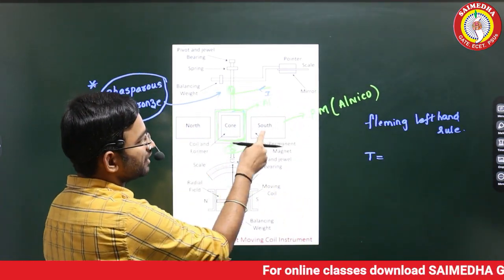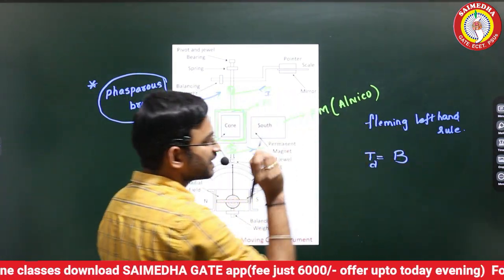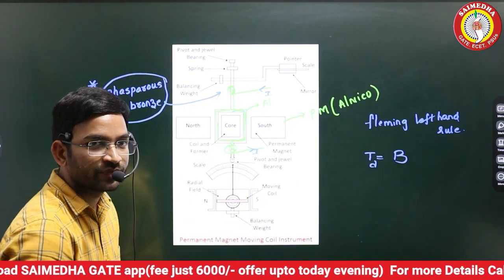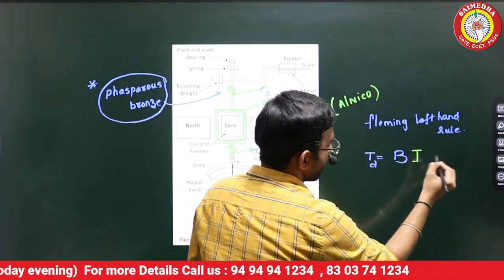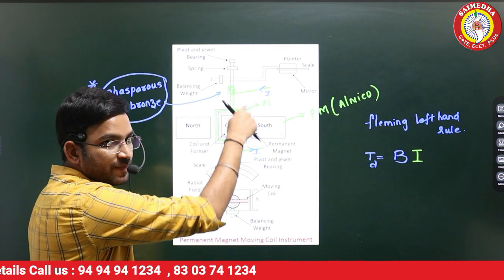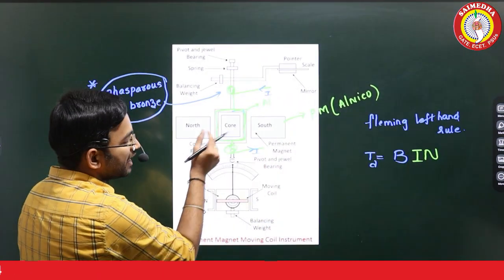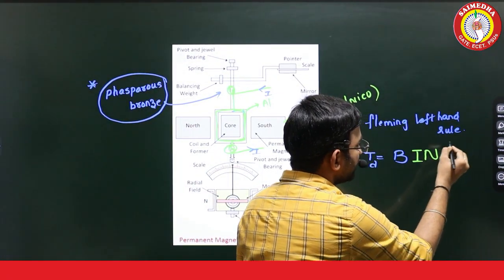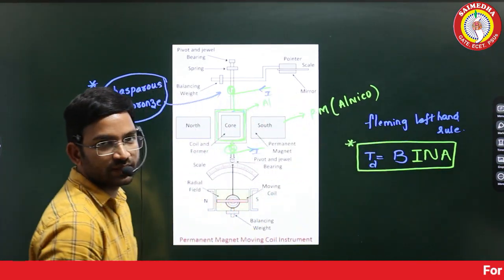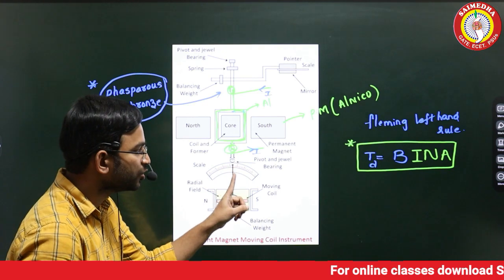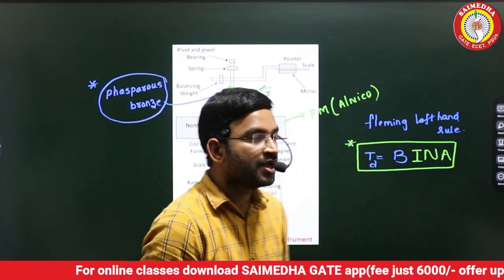The deflecting torque formula: North Pole and South Pole provide magnetic flux density B. So torque equals B into I (current) into N (number of turns) into A (area). This is the deflecting torque formula — a most important question in PMMC instruments.